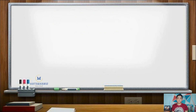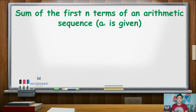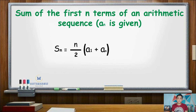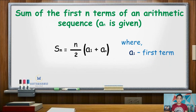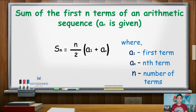For the sum of the first n terms of an arithmetic sequence where a sub n is given, we follow the formula: S sub n is equal to n over 2 times the quantity a sub 1 plus a sub n, where a sub 1 is the first term of the sequence, a sub n is the nth term, and n is the number of terms.